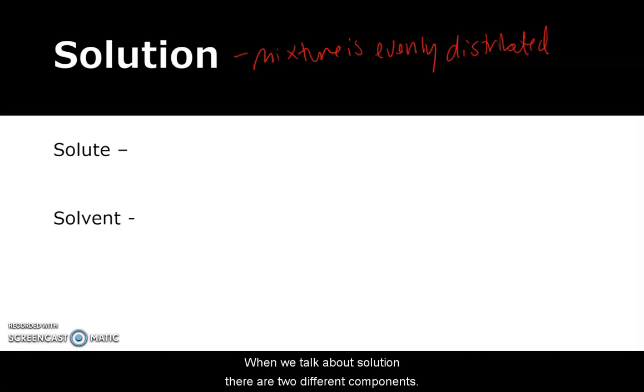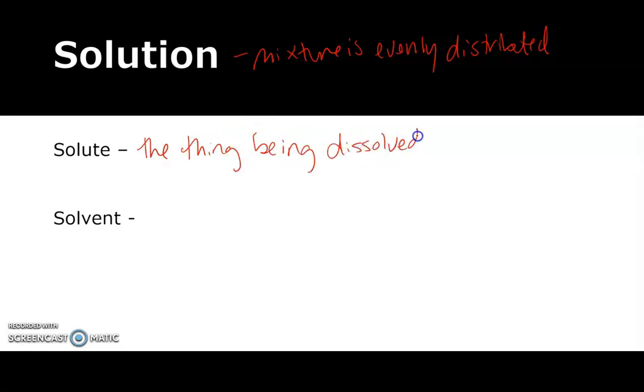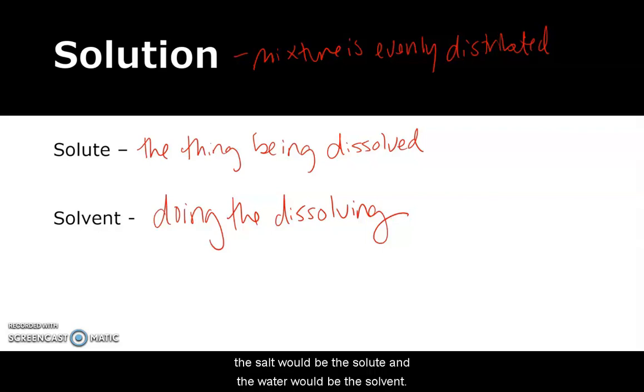And when we talk about solutions, there are two different components. There's the solute and the solvent. The solute, this is the one that's dissolved. And when we say dissolved, we mean those molecules are being pulled apart from each other. And then the solvent, this is the one that's doing the dissolving. So if we use our salt water, for example, the salt would be the solute and the water would be the solvent.